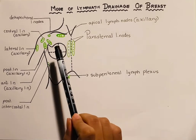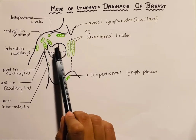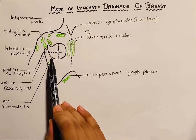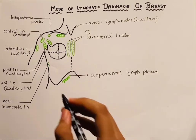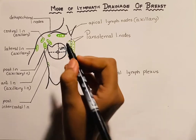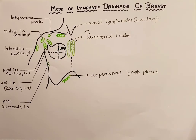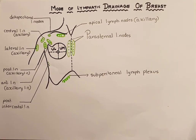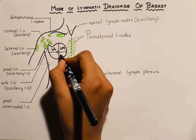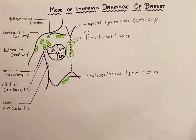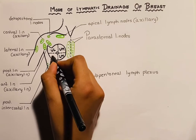As you can observe in this diagram, the breast has been divided into four quadrants — two upper quadrants and two lower quadrants. The upper quadrant situated medially is known as the upper medial quadrant, and the upper quadrant situated laterally is known as the upper lateral quadrant. Similarly, amongst the lower quadrants, the lower quadrant situated medially is known as the lower medial quadrant, and the one situated laterally is known as the lower lateral quadrant.